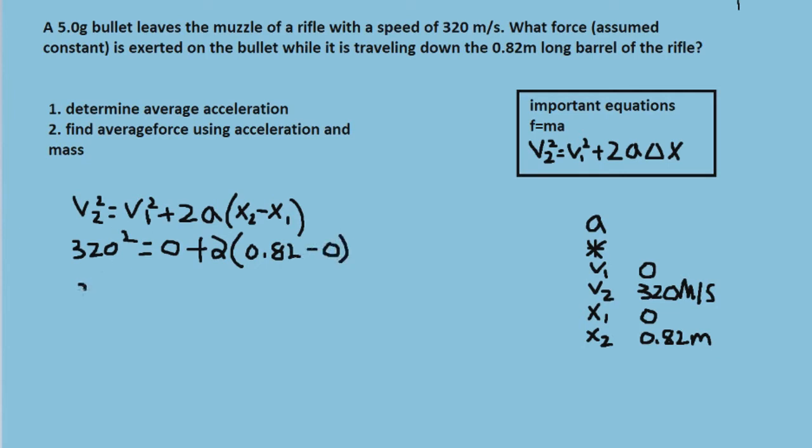So we're going to have 320 squared divided by 2 times 0.82.